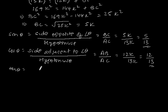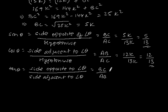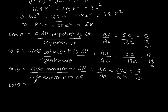Now tan θ is equal to the side opposite to angle θ divided by the side adjacent to angle θ, which is equal to BC/AB, which is equal to 5K/12K, which gives tan θ = 5/12.